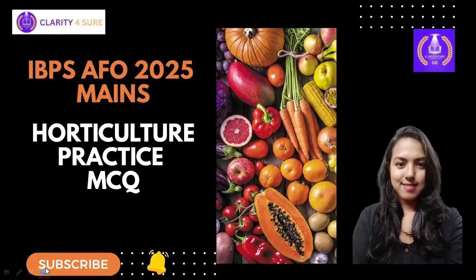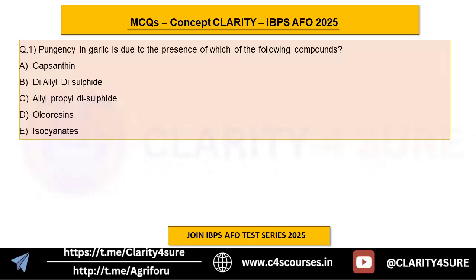The first question: pungency in garlic is due to the presence of which of the following compounds? Option A is capsaicin, option B is diallyl disulfide, C is allylpropyl disulfide, D is oleoresins, and E is isocyanates. The correct answer is option B, diallyl disulfide.